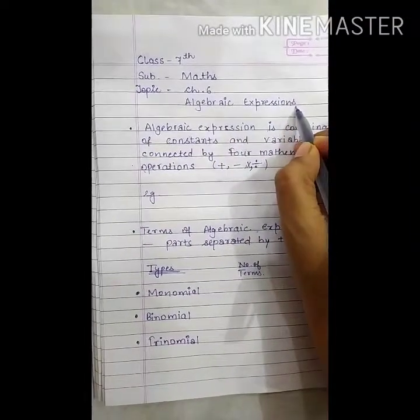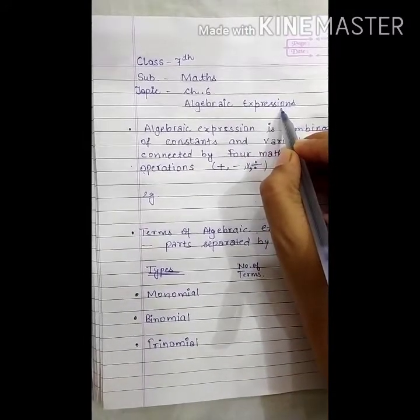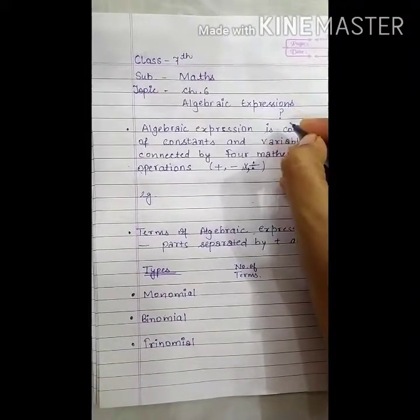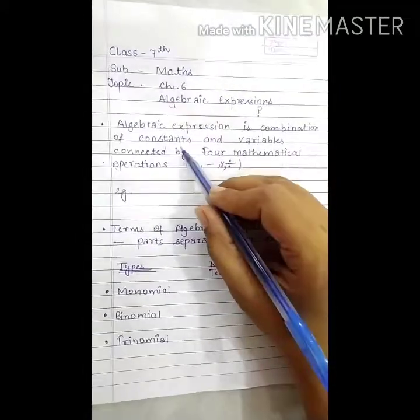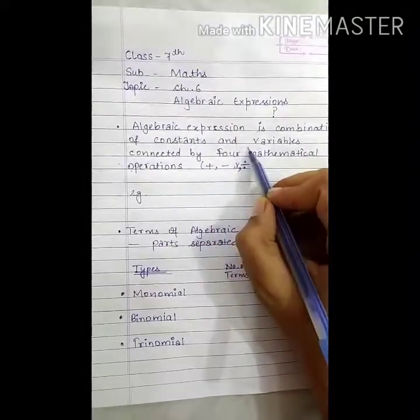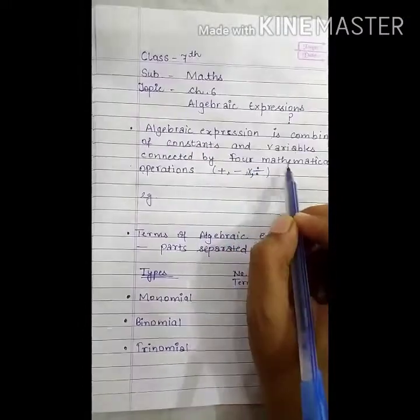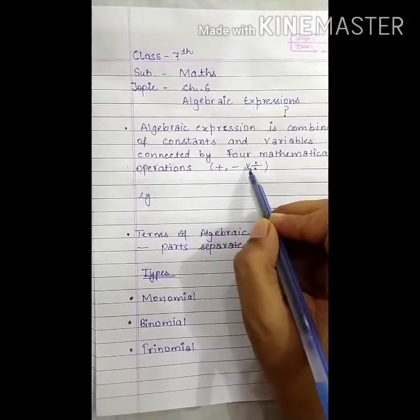You have studied about algebraic expressions in standard 6. So, what is algebraic expression? Algebraic expression is a combination of constants and variables connected by four mathematical operations: plus, minus, multiplication, and division.